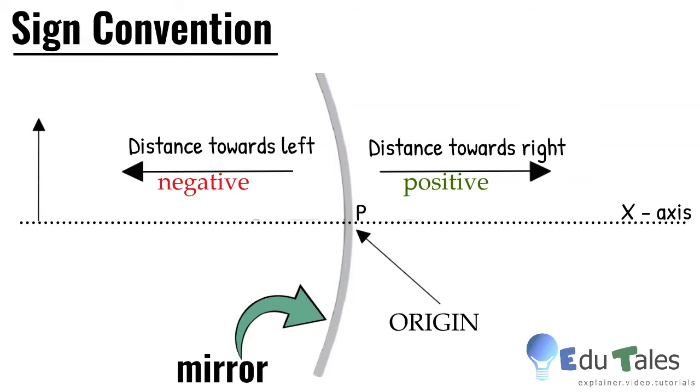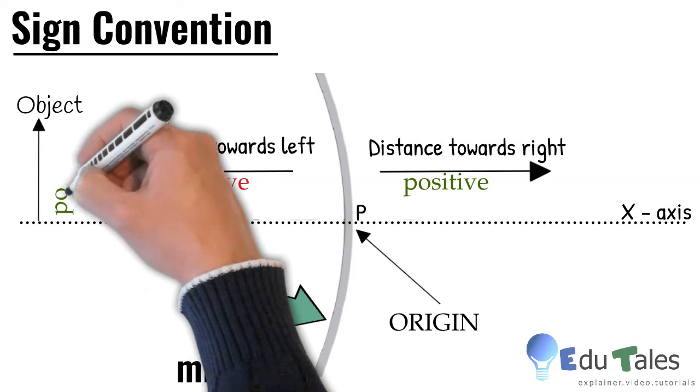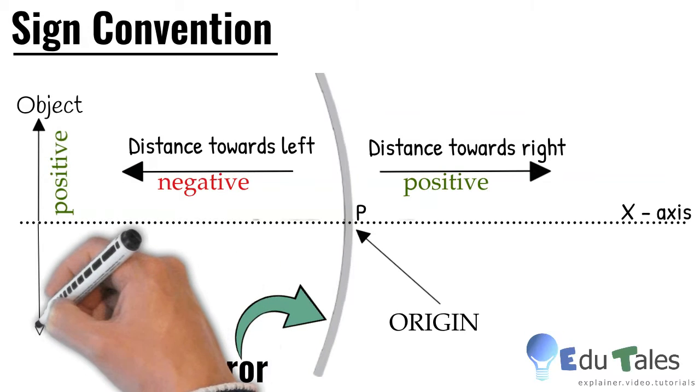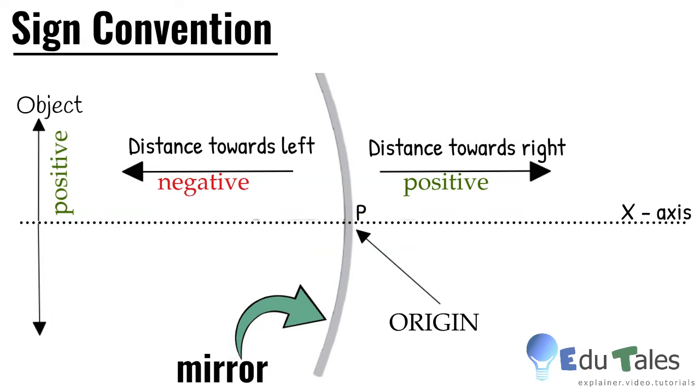Also remember that the object is always kept at the left side of the mirror, hence object distance u of the mirror is always negative. And finally, the distances measured perpendicularly to the principal axis are positive if they are above the principal axis and negative if they are below the principal axis.